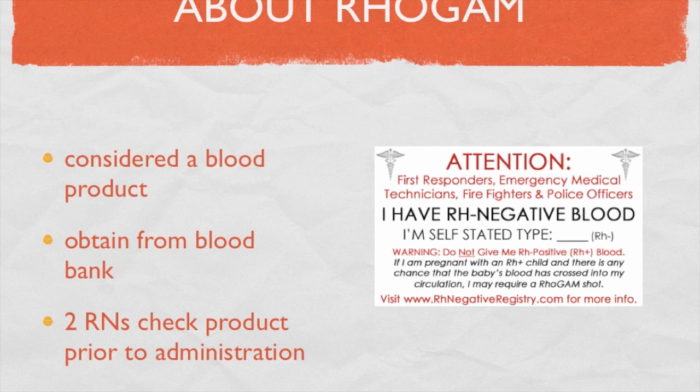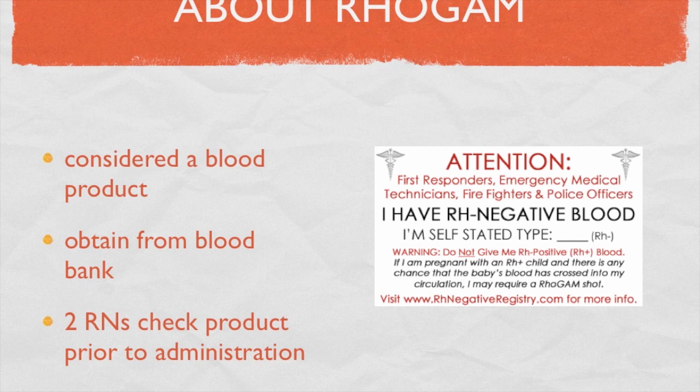To summarize: if an RH negative mother has a positive antibody screen, she is considered sensitized. We administer RhoGAM prophylactically after obstetrical procedures, childbirth, and miscarriages, as long as she is not sensitized — meaning her antibody screen is negative. This is also assuming her baby was RH positive at delivery. If her baby is RH negative, she does not need RhoGAM. I hope this clears things up and gives you a better understanding of why a patient needs RhoGAM.